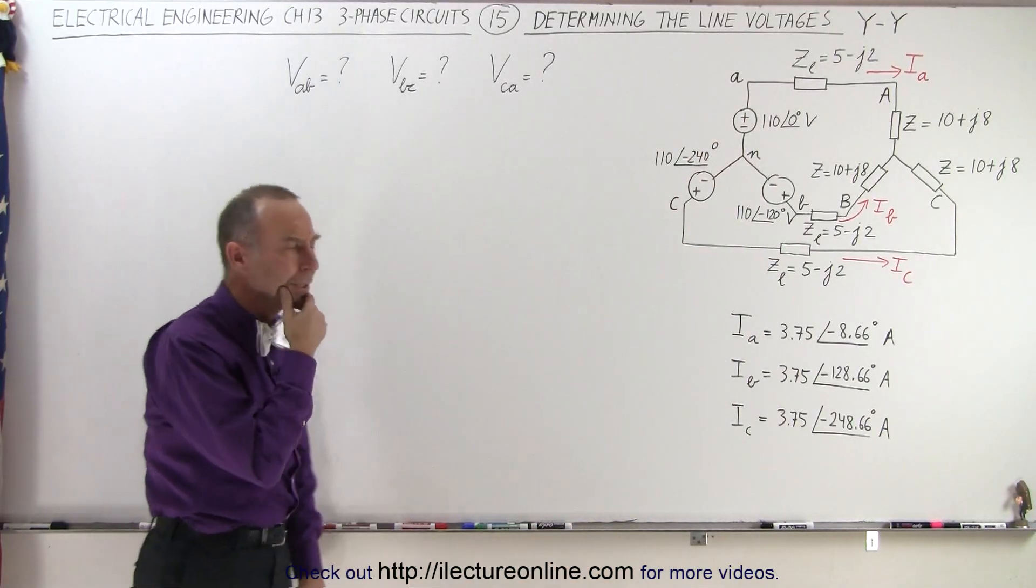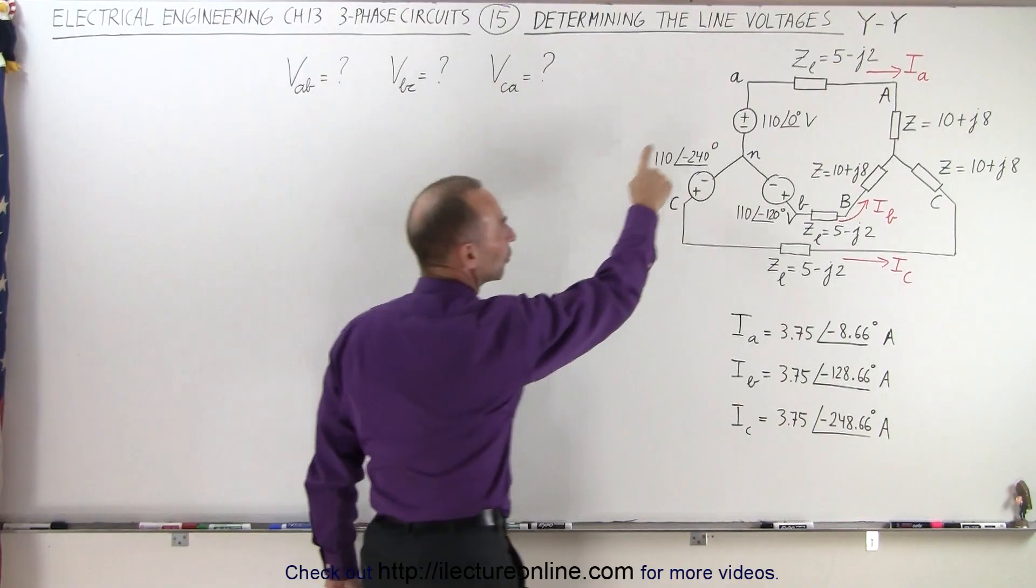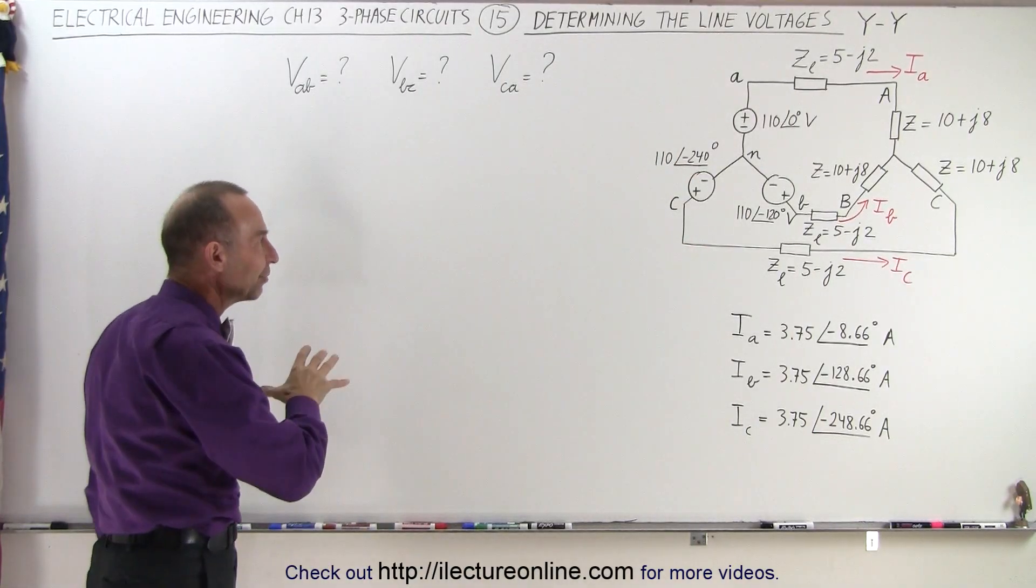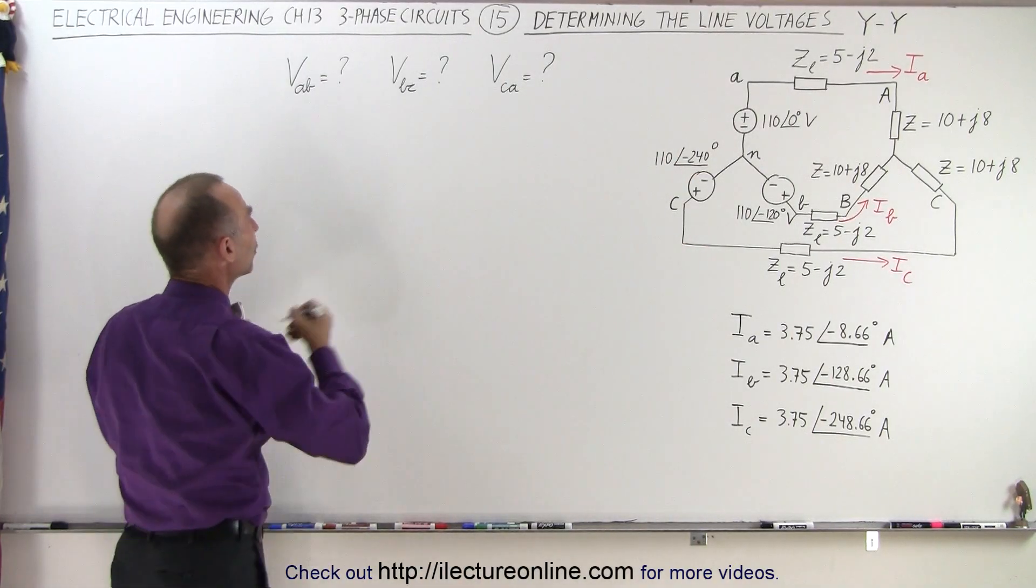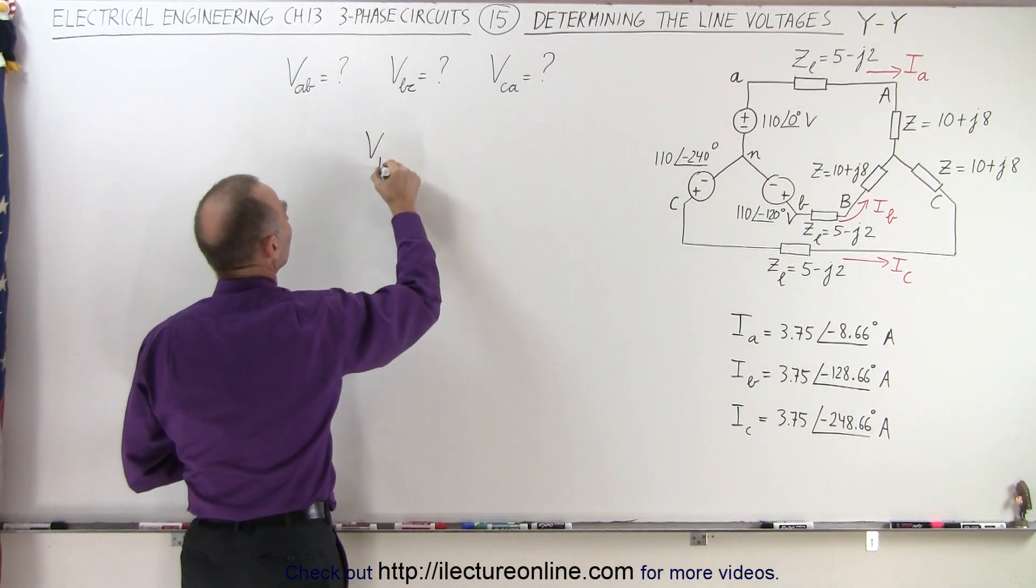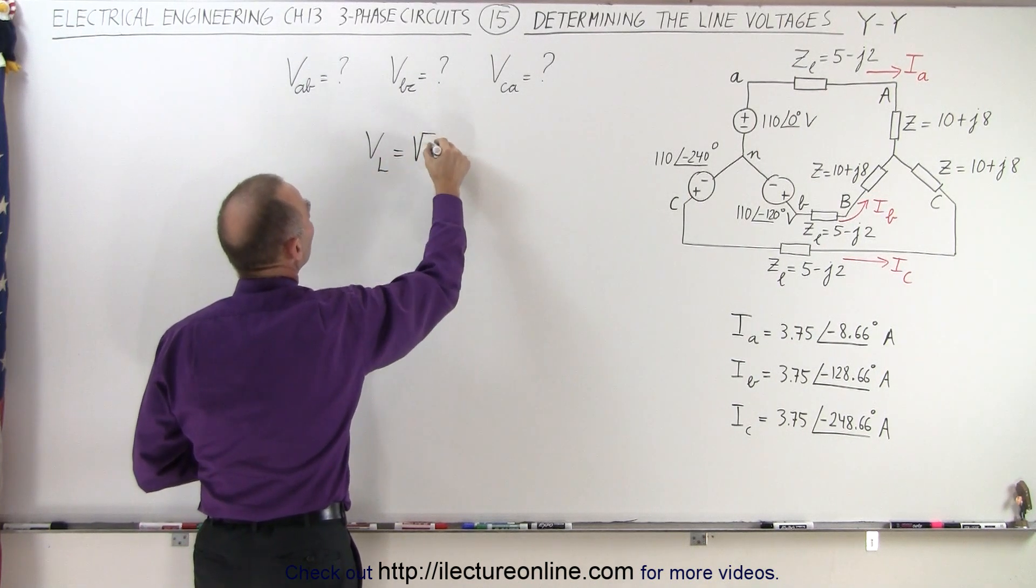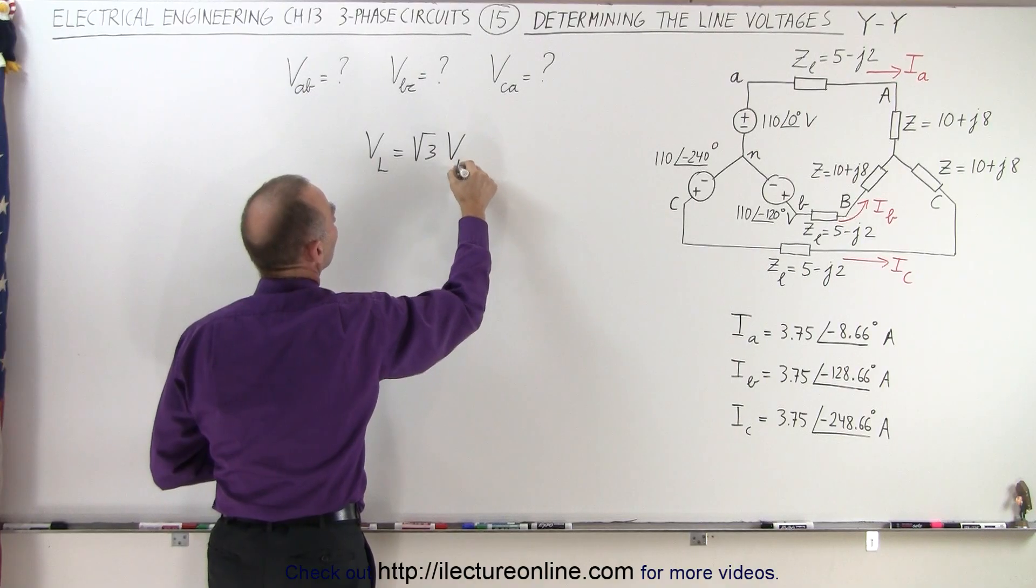How do we do that? Well, we were given the phase voltages, and we know there's a relationship between the phase voltages and the line voltages. We know that the line voltage is equal to the square root of three times the magnitude of the phase voltage.